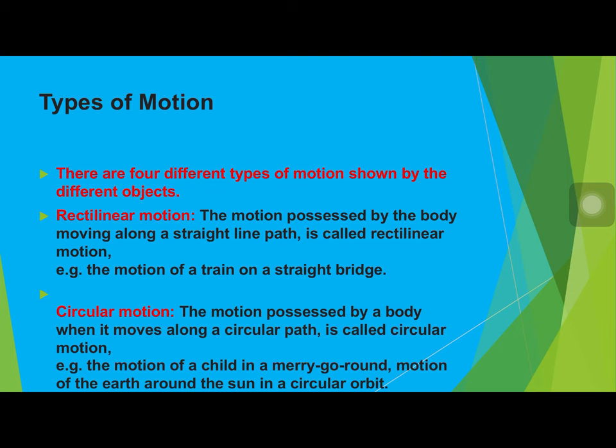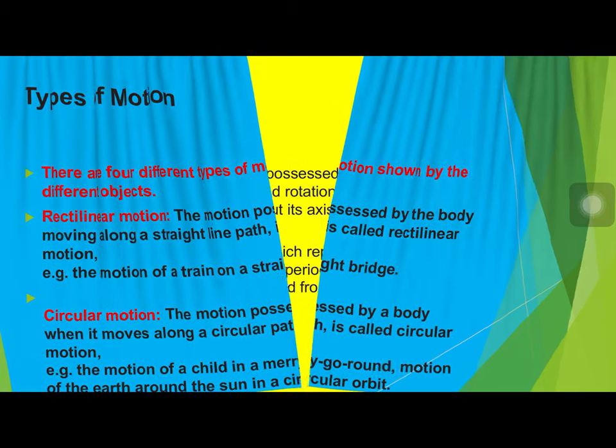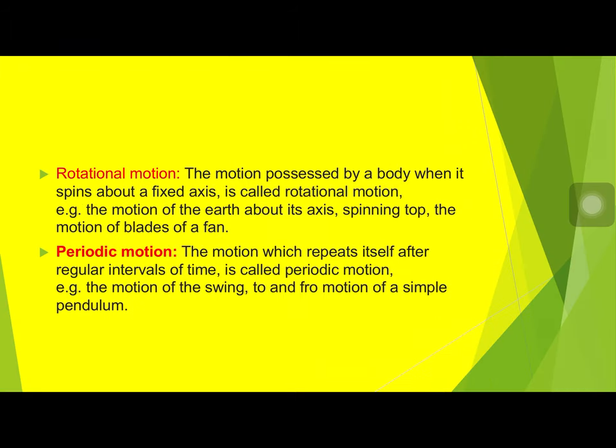Second is circular motion — the motion possessed by a body when it moves along a circular path, like the motion of a child in a merry-go-round or the motion of the Earth around the Sun. Third is rotational motion — the motion possessed by a body when it spins about a fixed axis, like a top spinning on its axis, or the Earth spinning on its own axis, which causes day and night.